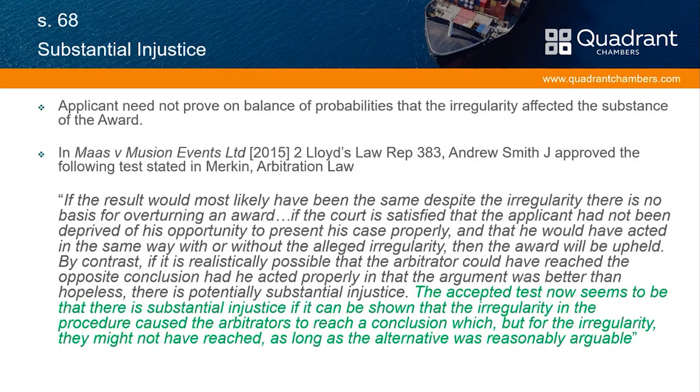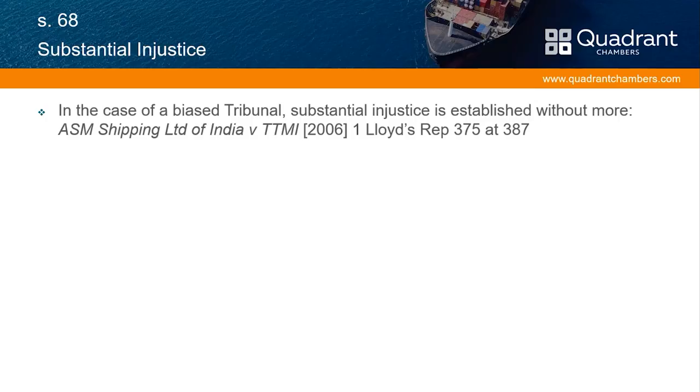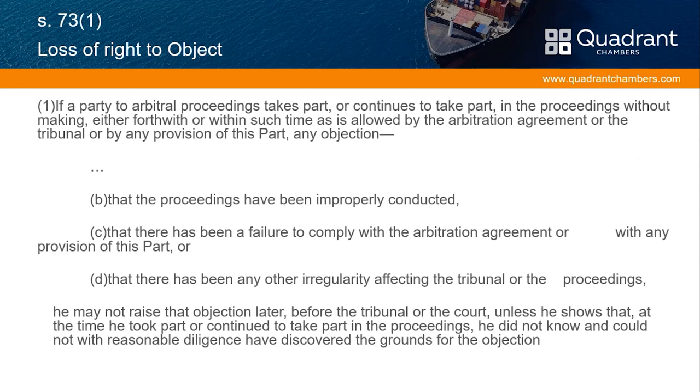The substantial injustice standard has been considered in Mass and Mission Events Limited. You don't need to prove on a balance of probabilities that the irregularity did affect the outcome of the proceedings and the substance of the award. There is also a risk with these types of potential challenges that you will lose the right to object — you have to raise your objection in broad terms pretty much immediately or within a short period of time. This provides a particular challenge: if you think the tribunal is acting unfairly but you're halfway through an arbitration, do you strategically tell the arbitrator you think they're acting unfairly and reserve the right to challenge any subsequent award under the Act? Or do you keep your head down, fearing that doing so will push them further against your client? Not an easy judgment to make.